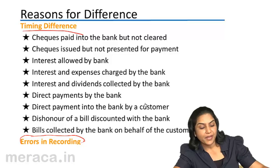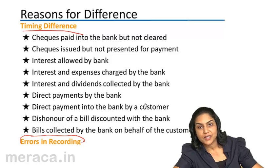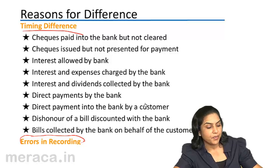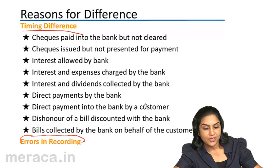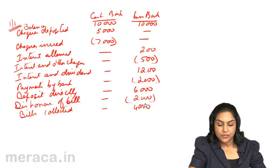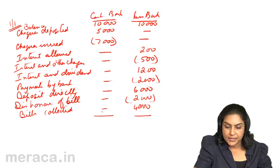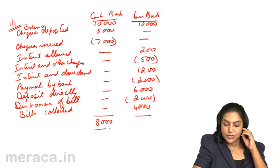There could also be errors in recording. These errors could be casting errors, errors in posting, or omissions, etc. As a result of all these differences, the cashbook balance stands at 8,000.